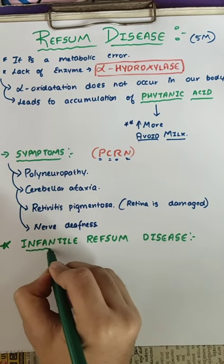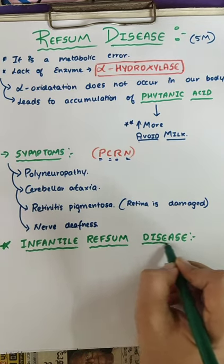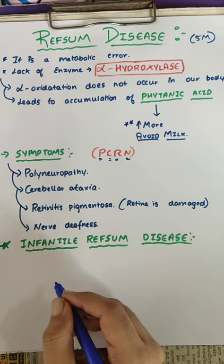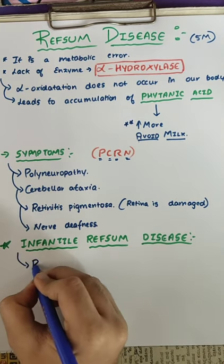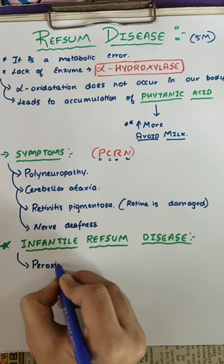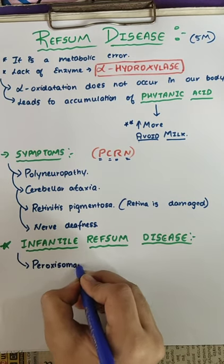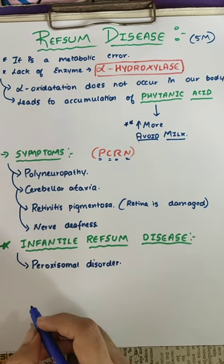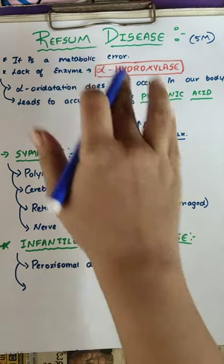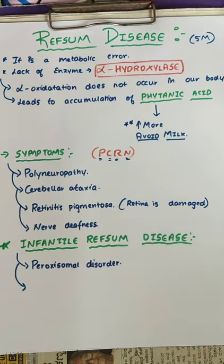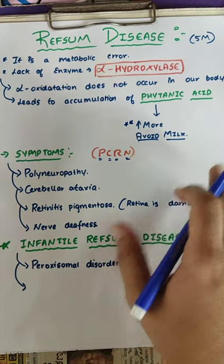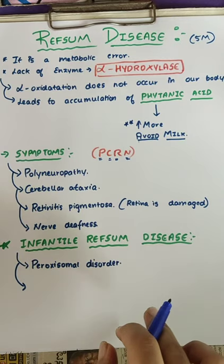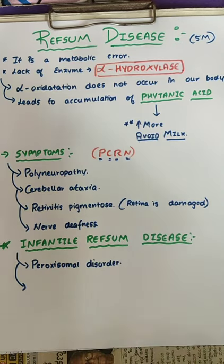There is another thing to remember: infantile Refsum disease. If Refsum disease occurs in infants, it is called infantile Refsum disease. It is a peroxisomal disorder. In regular Refsum disease there is accumulation of only phytanic acid, but in infants there will be accumulation of phytanic acid as well as VLCFA — very long chain fatty acids.